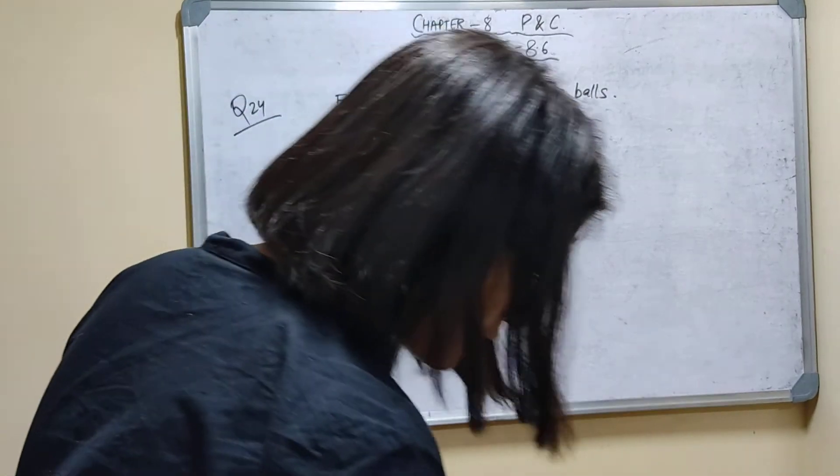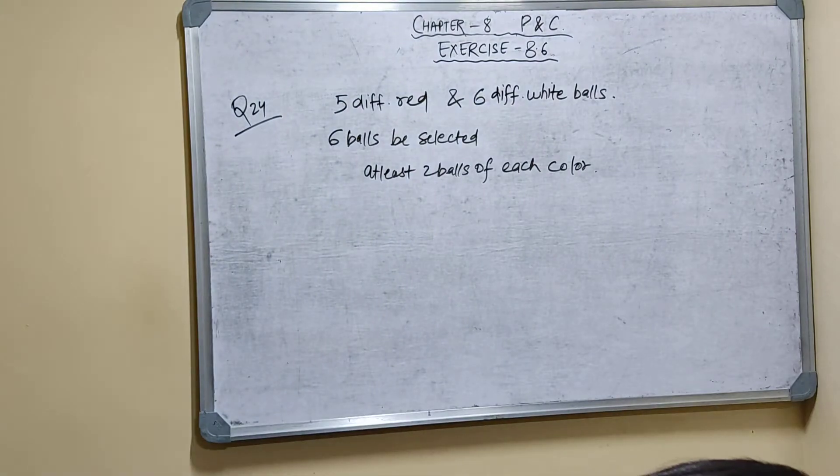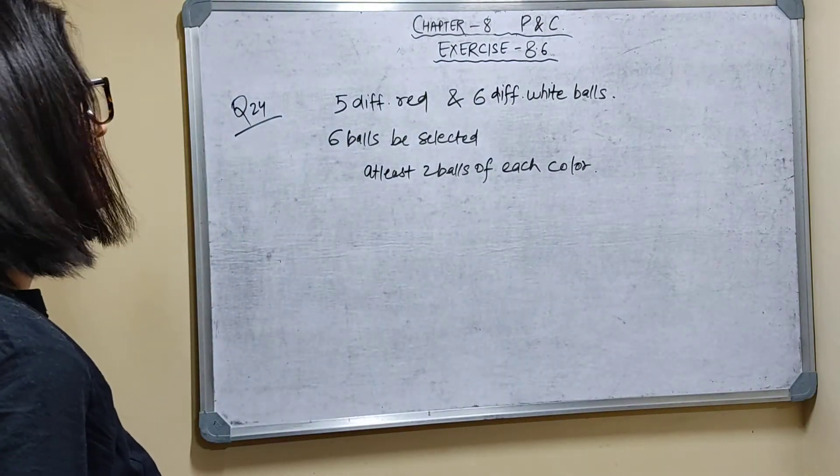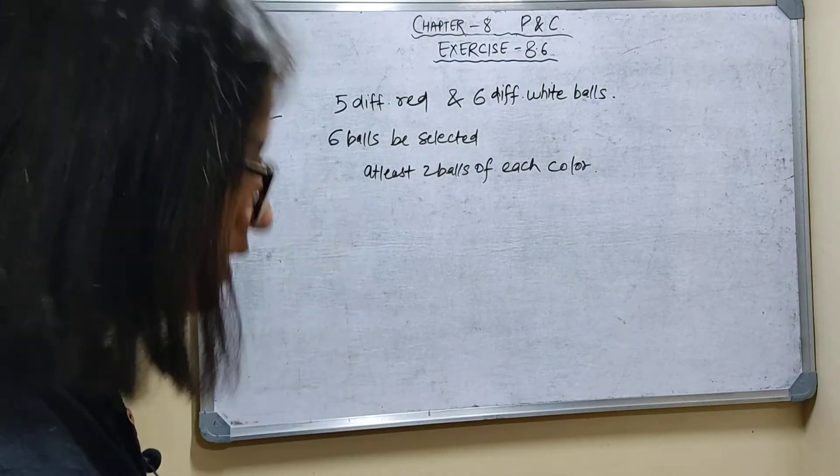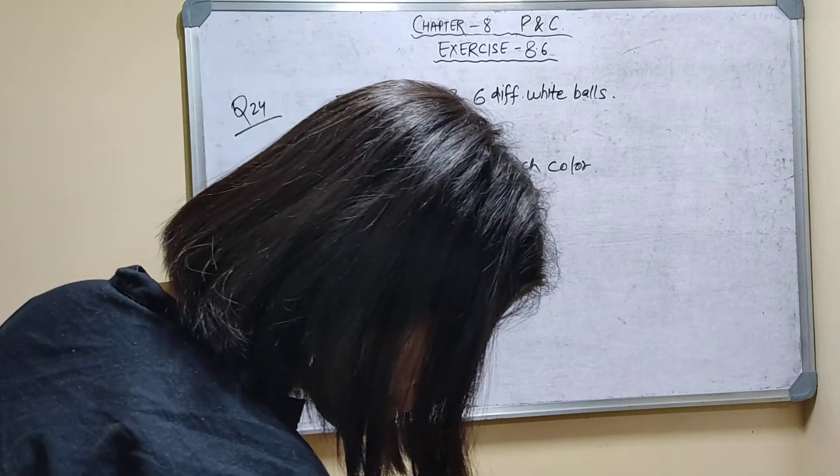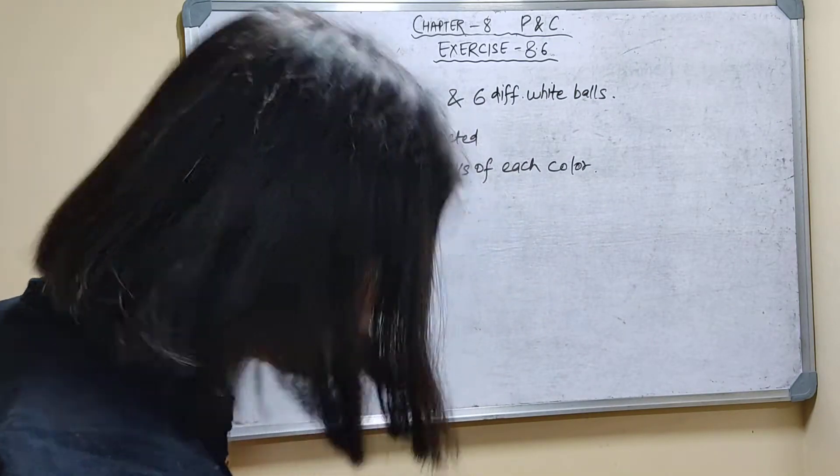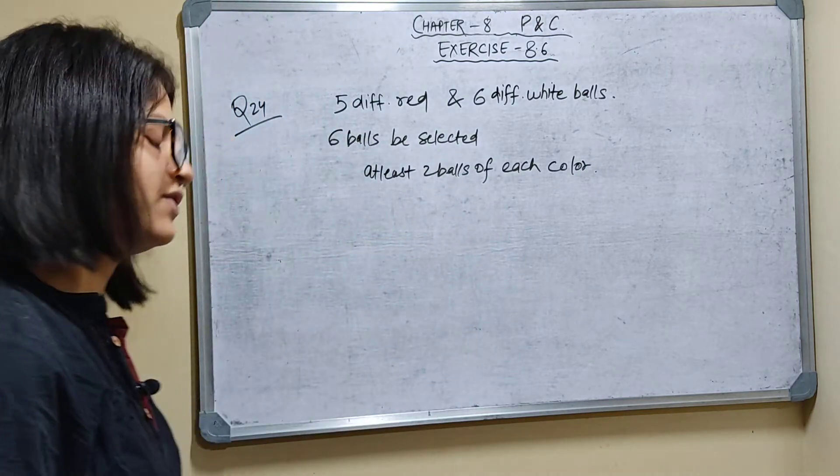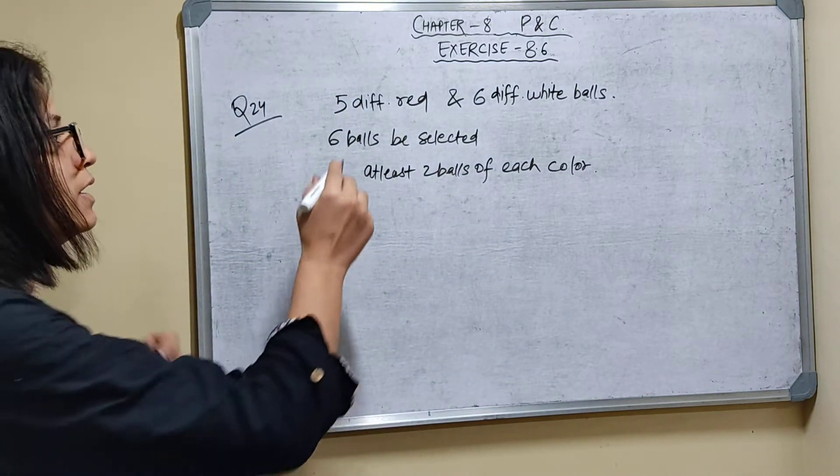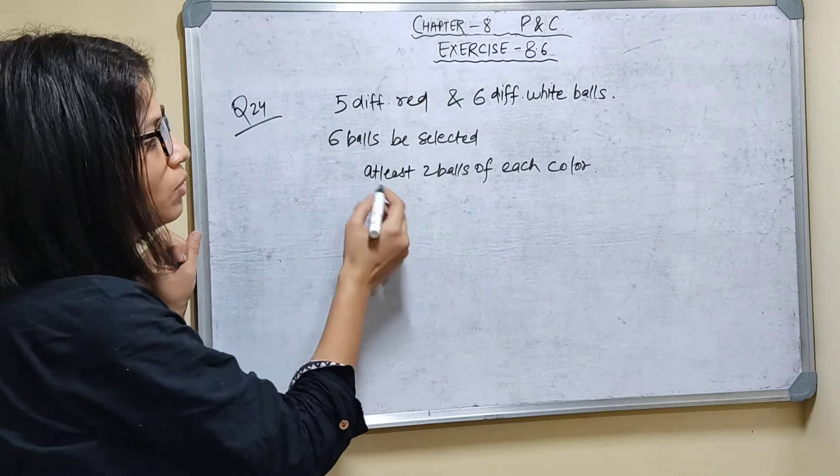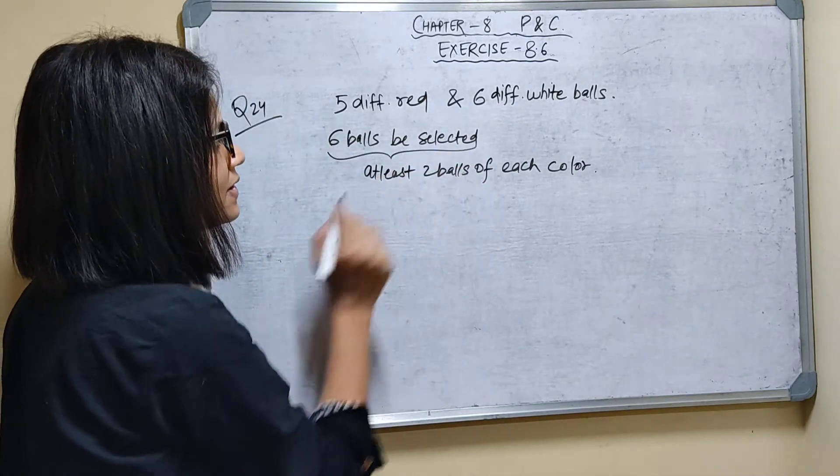Question number 24: A box contains 5 different red and 6 different white balls. In how many ways can 6 balls be selected so that there are at least 2 balls of each color? So, I need to take at least 2 balls of each color and select a total of 6 balls.